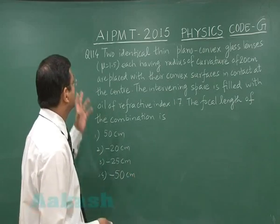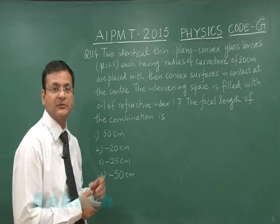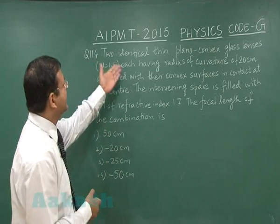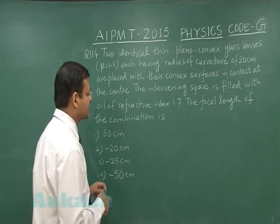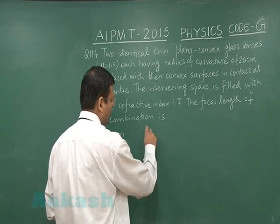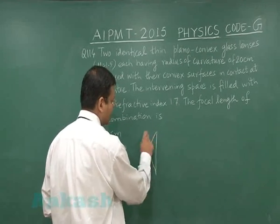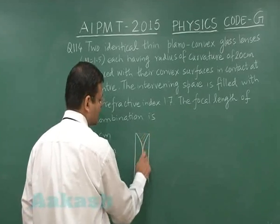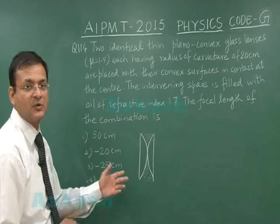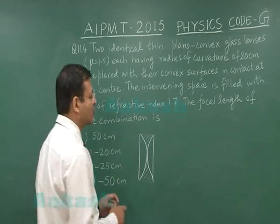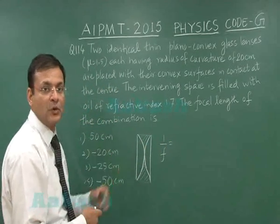Question 114 is a combination of thin lenses using the equivalent focal length formula. Two identical thin plano-convex glass lenses, each with a given radius of curvature, have been placed together with an intervening medium of oil. So it is a combination of three lenses. To find 1/f, first write down the focal length for each plano-convex lens — there are two of them.